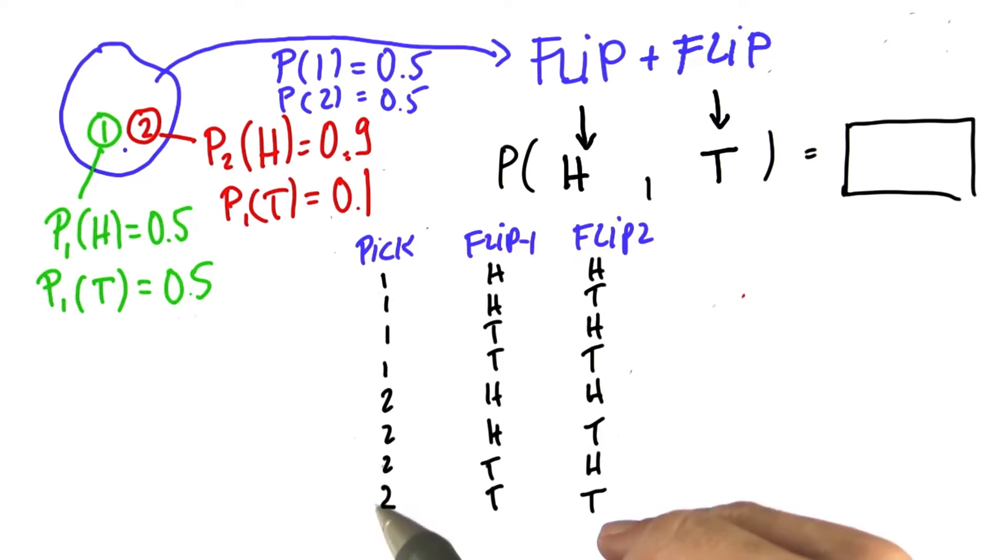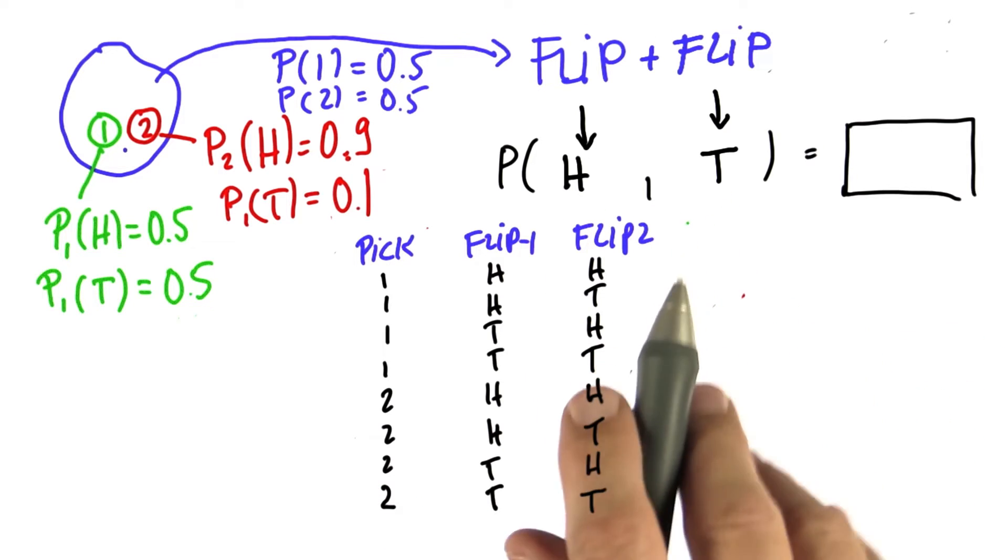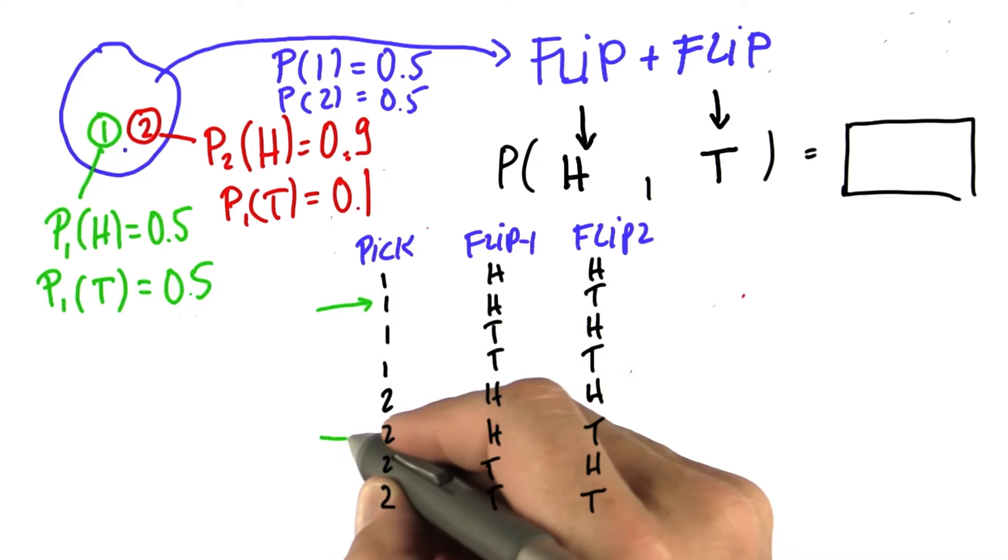So these eight different cases summarize my truth table. I now need to observe just the cases where head is followed by tail. There's one right here and one over here.